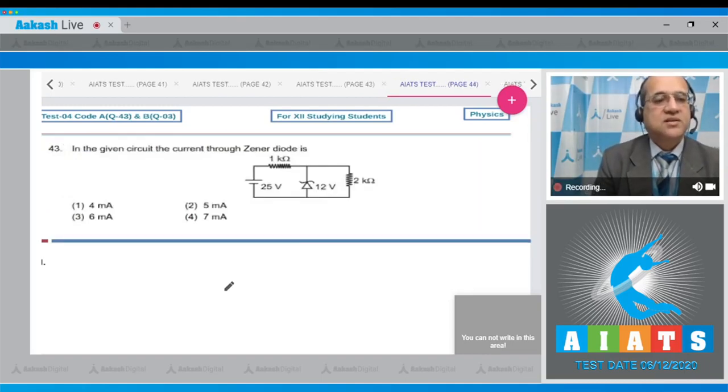Question number 43: In the given circuit, calculate the current through the zener diode. Four options are given. This is positive negative and this is a zener diode, so voltage drop of 12 volts will occur.